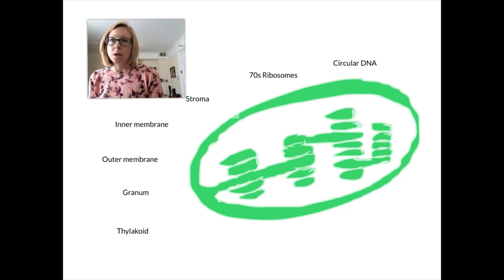What we can see in front of us is a chloroplast. Chloroplasts are small organelles, they are similar in size to mitochondria.